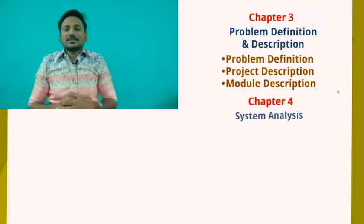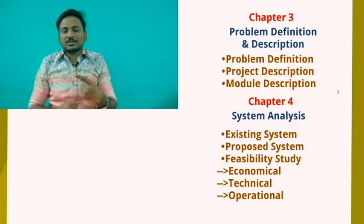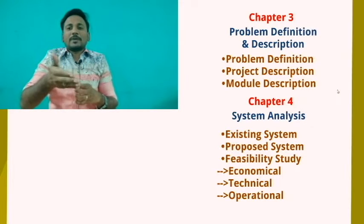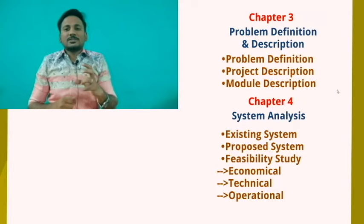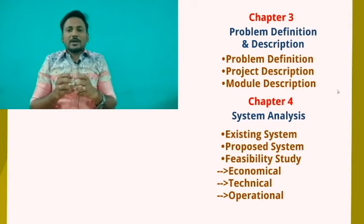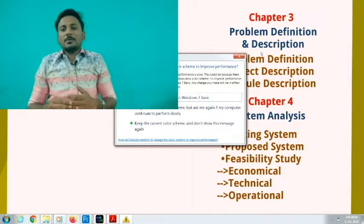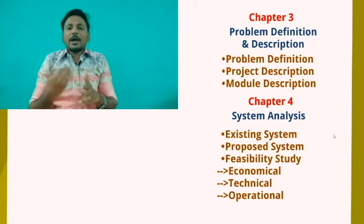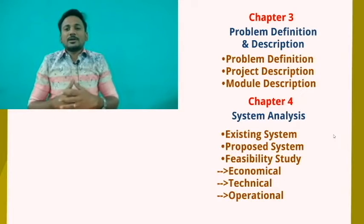The fourth chapter is System Analysis, and here we go with three concepts. The first one is Existing System. If you have a project, you describe what the existing system is. For example, if you develop an application for students to apply for a leave letter, you describe how leave letters are currently being done manually. If there are any drawbacks in the current process, you represent those in the Existing System section.